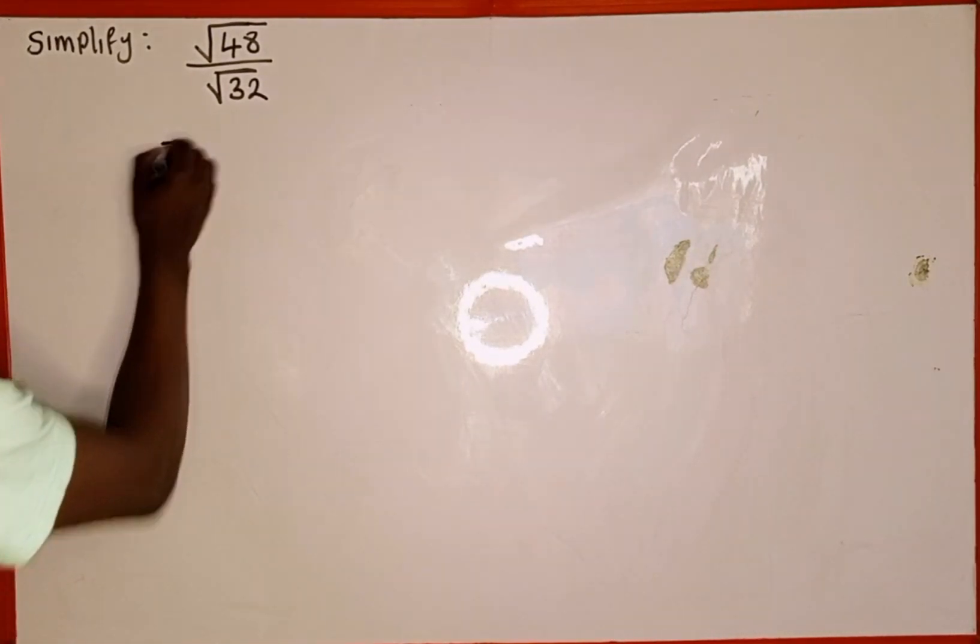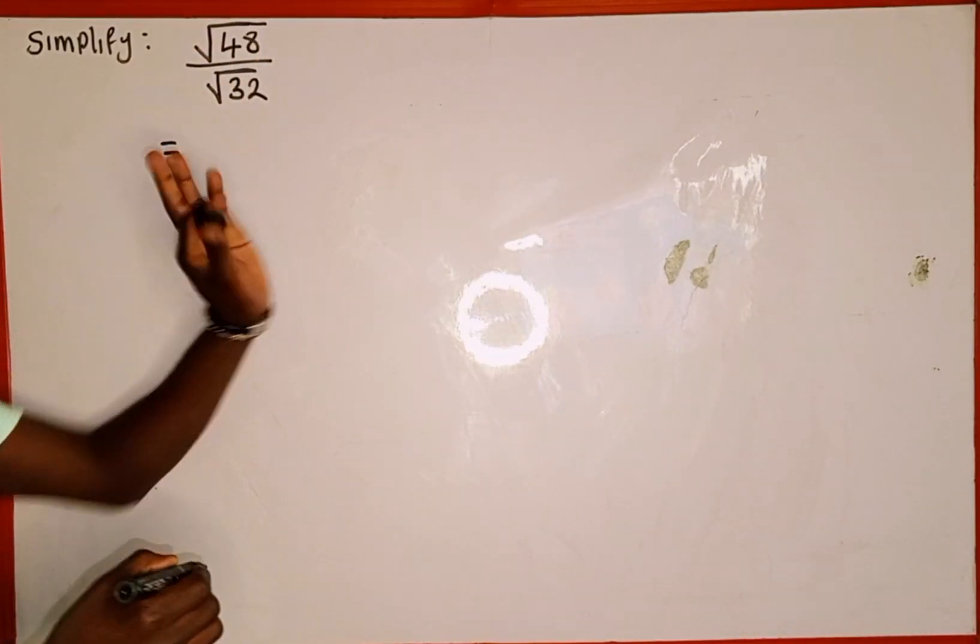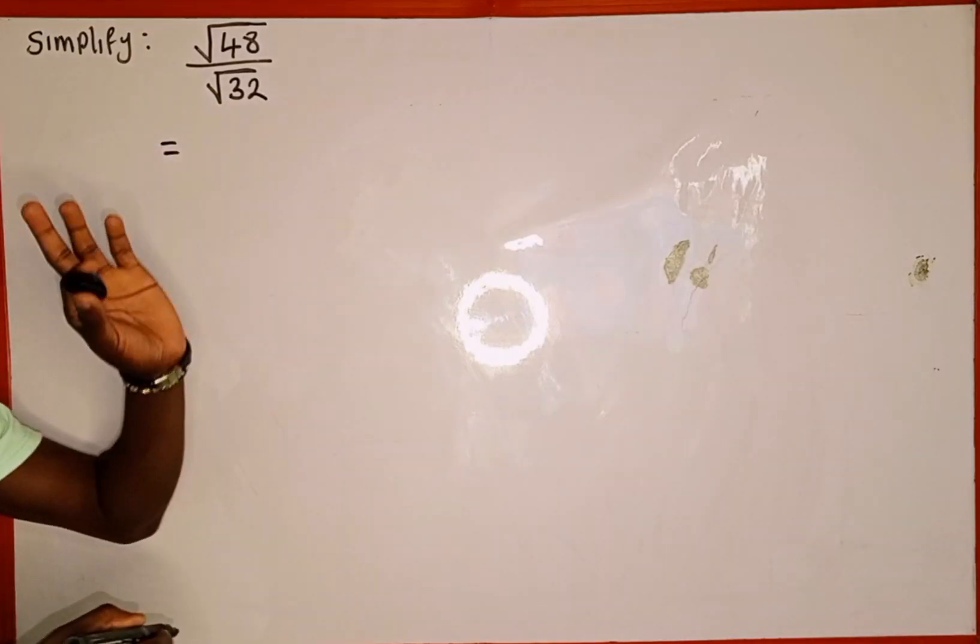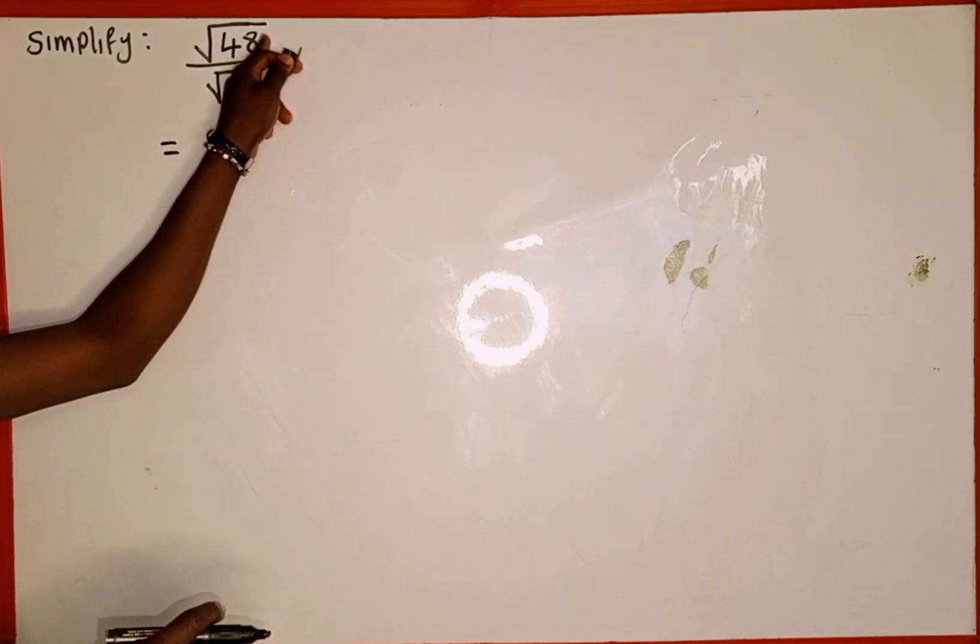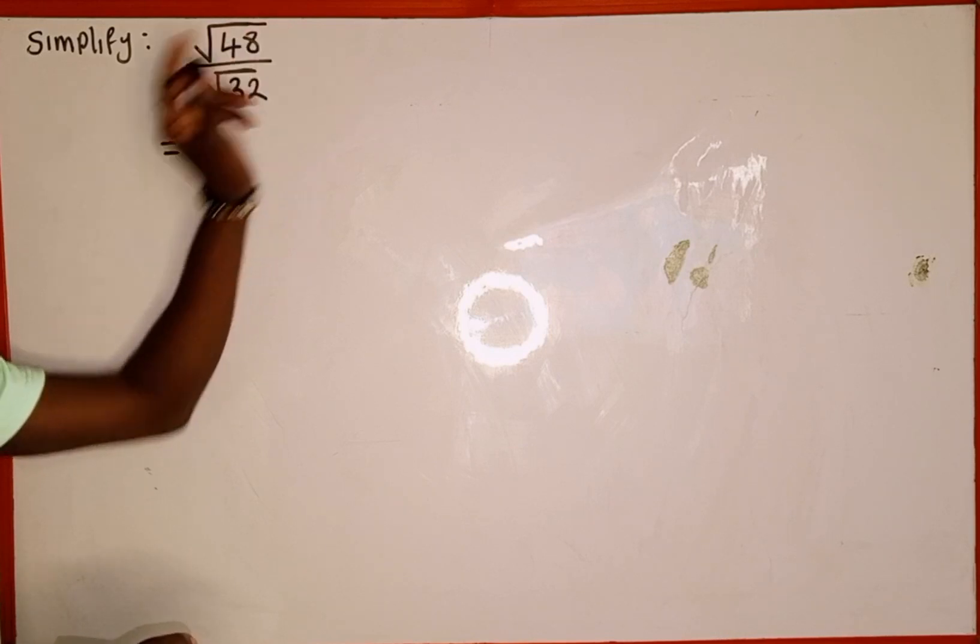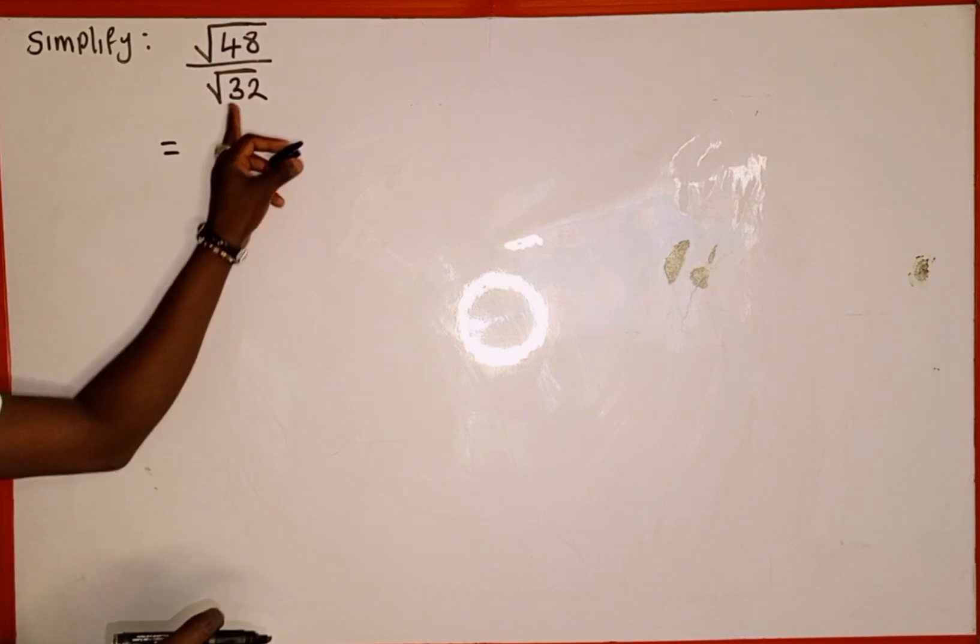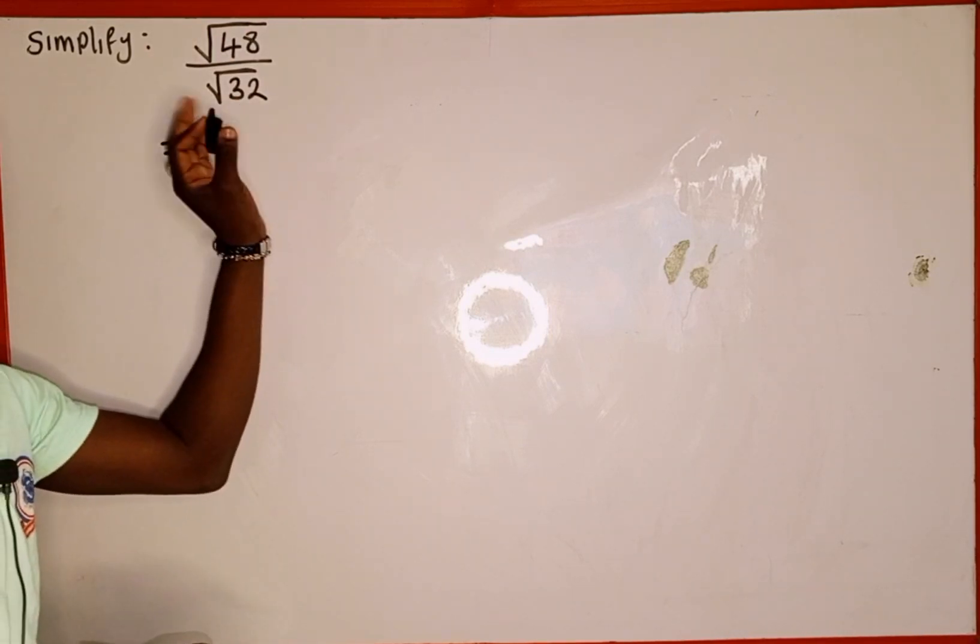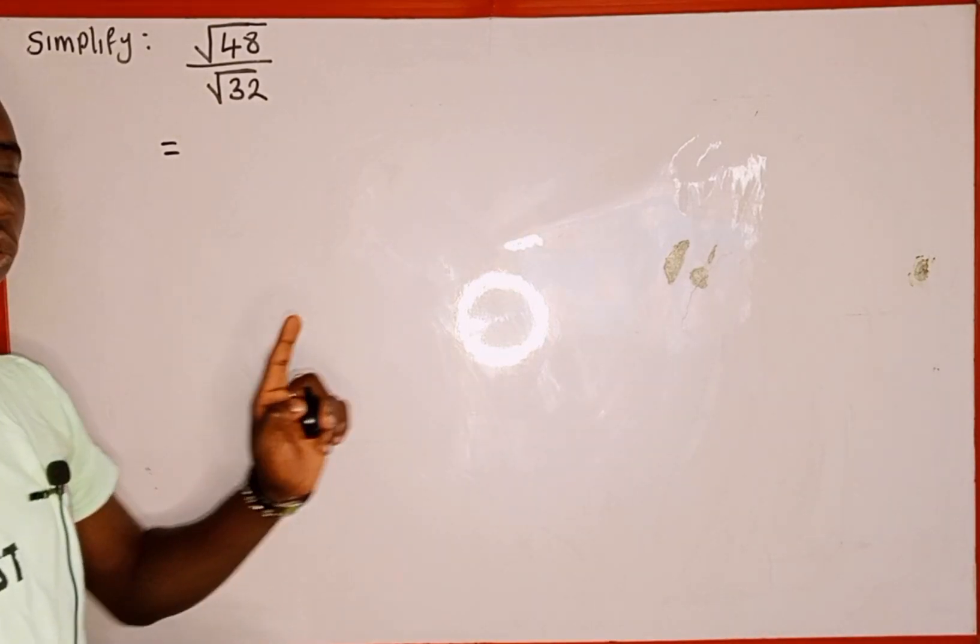So the first thing we're going to do, 48 is not a perfect square and also 32 is not a perfect square. We're going to look for two numbers. When we multiply, it's going to give us 48. And also we look for another two numbers. When we multiply, it's going to give us 32. And one of that number must be a perfect square.